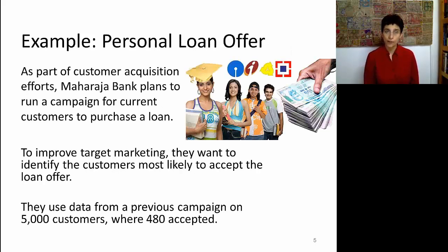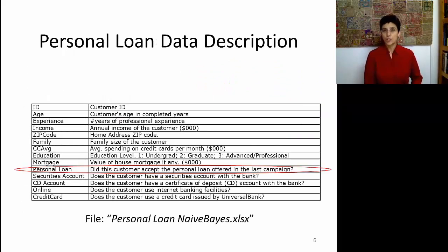We're going to use the same personal loan offer example that we used earlier on. Remember that Maharaja Bank is using information from a previous offer campaign to try and build a smart algorithm that will help them decide who to send a new offer to. Their goal is to improve target marketing by identifying the customers who are most likely to accept the loan offer. The data dictionary shows that we have the outcome variable being personal loan, and that's a binary outcome.